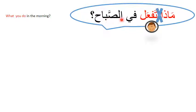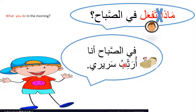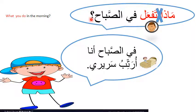We are going to cross out the question part and start answering from the response. The boy will say, for example, في الصباح — in the morning — and then what he does. Cross the question mark, start with the time adverb, and then say whatever you are doing in the morning.